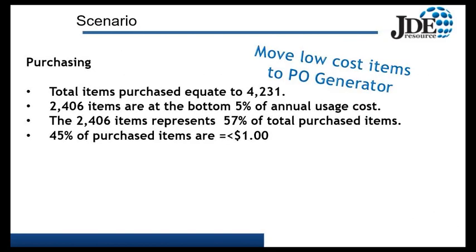Let's look at a scenario. We've got a purchasing department with total items purchased equating to 4,231. Of those 4,231, some 2,406 are at the bottom 5% of annual usage cost — that represents 57% of the total purchased items. Additionally, 45% of the purchased items are equal to or less than $1. So there is clear room to offload and streamline purchasing on these low-cost items.